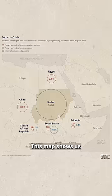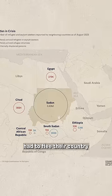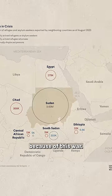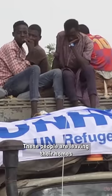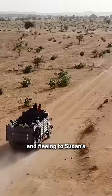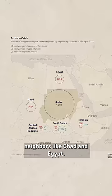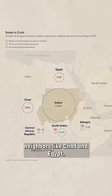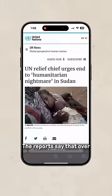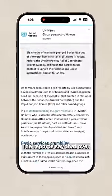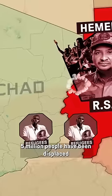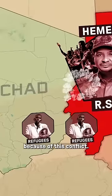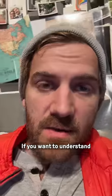This map shows us how many people have had to flee their country because of this war. These people are leaving their homes and fleeing to Sudan's neighbors, like Chad and Egypt. The reports say that over five million people have been displaced because of this conflict.